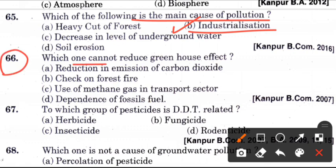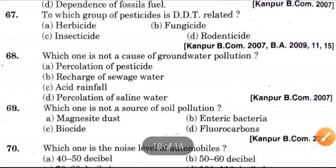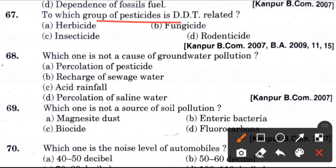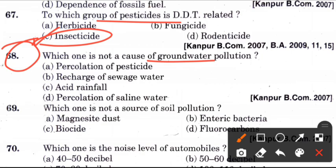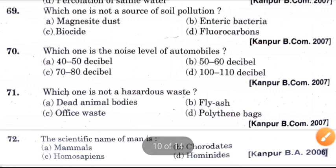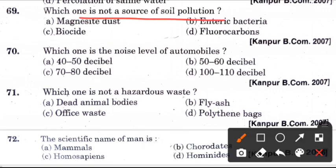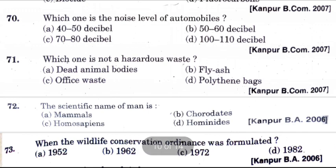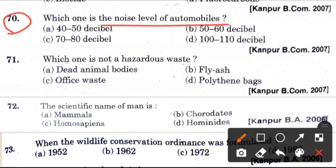Next question: Which one cannot reduce greenhouse effect? Answer is D, which is dependence on fossil fuels. Next question: To which group of pesticide is DDT related? Answer is C, which is insecticide. Next question: Which one is not a cause of groundwater pollution? Answer is C, which is acid rainfall. Which one is not a source of soil pollution? Answer is D, that is fluorocarbons. Now, seventy-third question: Which one is the noise level of automobiles? Answer is D, 100 to 110 decibels.